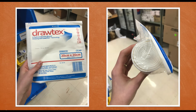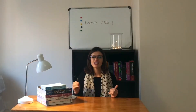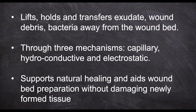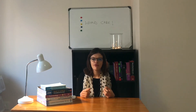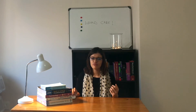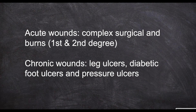The next product is Drawtex, a hydroconductive wound dressing. Its mechanism of action works in three ways: it lifts, holds, and transfers exudate, wound debris, and bacteria away from the wound bed through capillary, hydroconductive, and electrostatic mechanisms. It supports natural healing and aids wound bed preparation without damaging newly formed tissue. Indications include acute wounds such as complex surgical wounds and first- and second-degree burns, as well as chronic wounds like leg ulcers, diabetic foot ulcers, and pressure ulcers. The only contraindication is that it cannot be used when arterial bleeding is present.